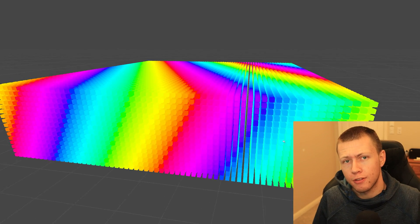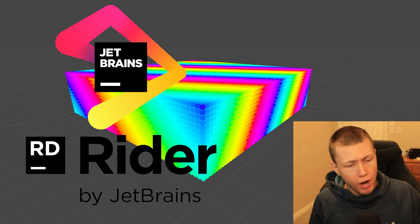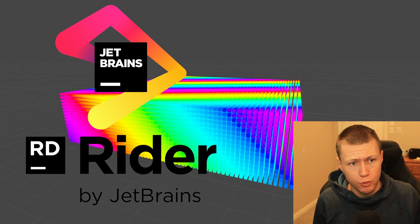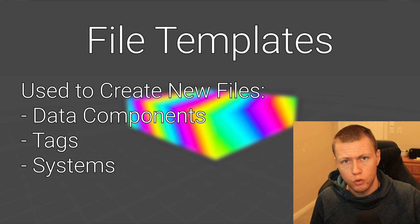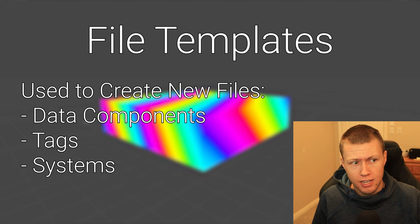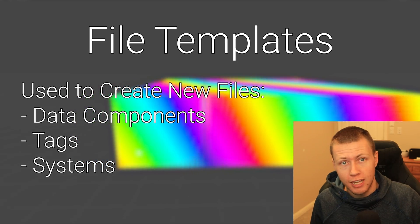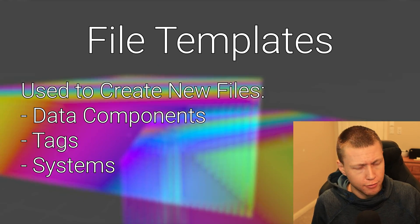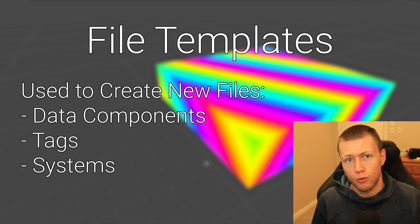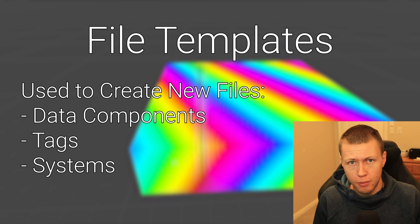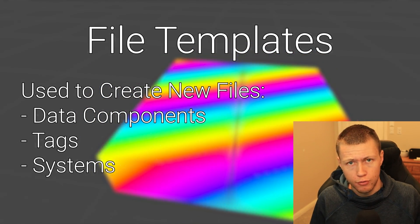Today I'm going to be showing you how I've solved this problem for myself by using templates in Rider. Inside Rider there are two types of templates we can use: file templates and live templates. File templates are great for creating new files. In Unity ECS we're going to be creating lots of individual class files for different types of data components and systems, so it's really important to have shortcuts that pre-populate and do a bunch of things for us, saving time and letting us focus on solving problems rather than writing repetitive code.